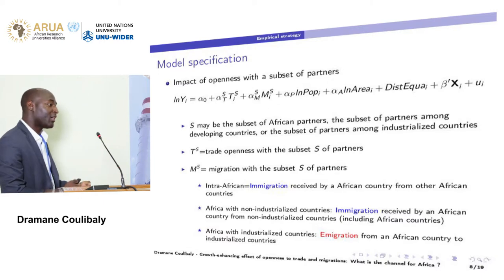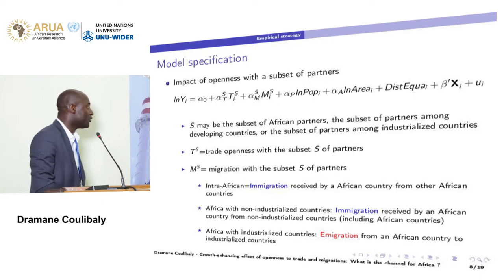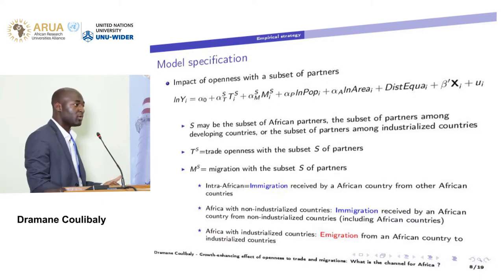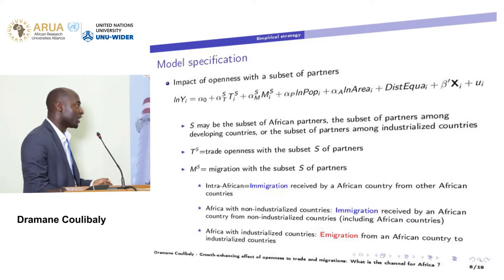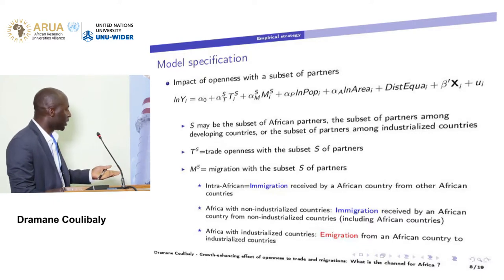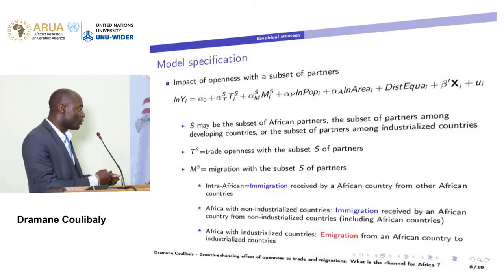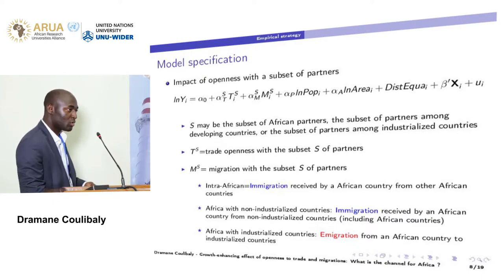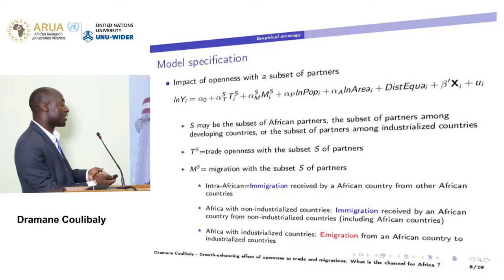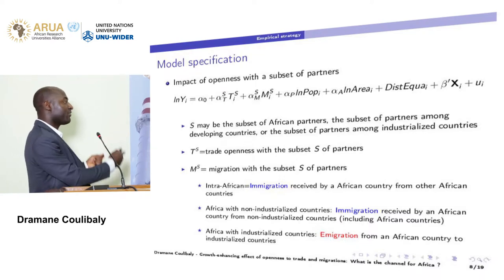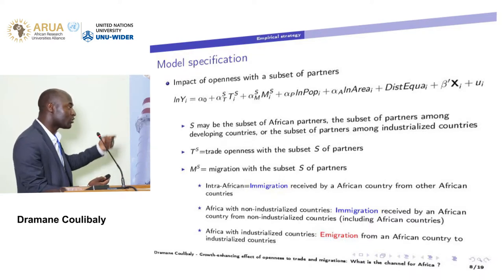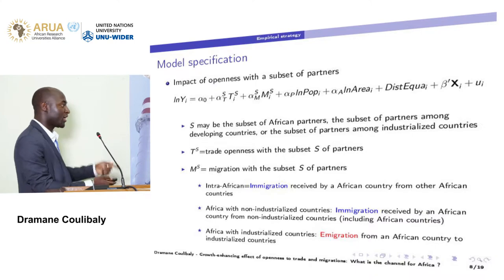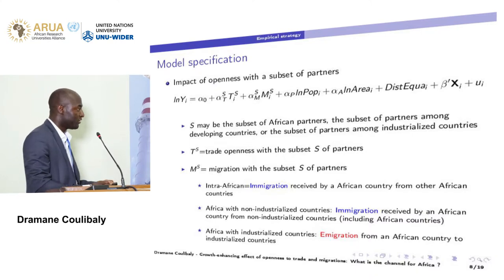In the case of African openness with non-industrial countries, we also use immigration received by an African country from non-industrial countries, including African countries. In the case of African openness with industrial countries, we use emigration — immigration from Africa to OECD countries — since immigration from OECD to Africa is not very significant.